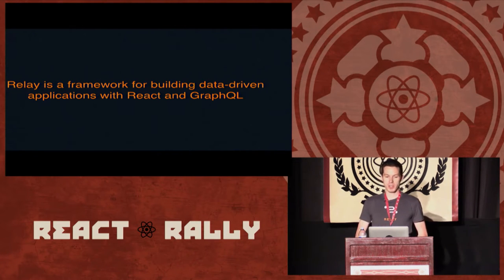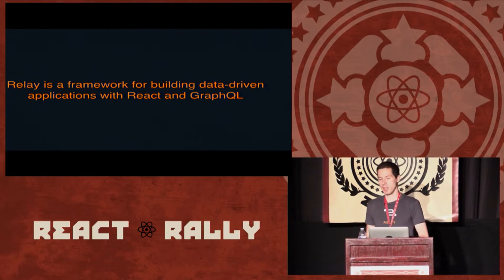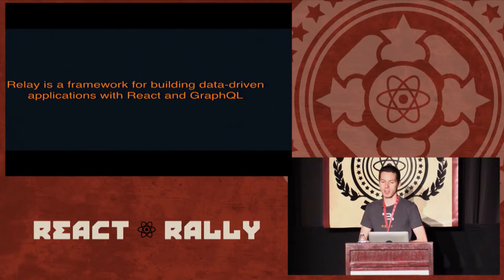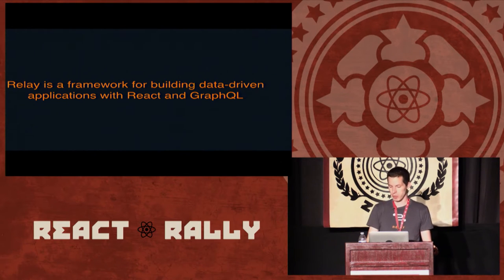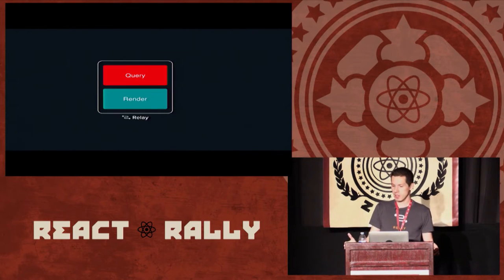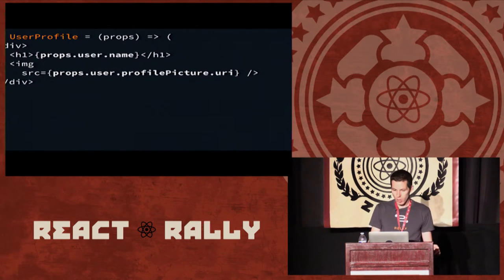Relay is a framework for building data-driven applications with React and GraphQL. The goal is for developers to specify what data is needed for each of their views, and then Relay figures out how and when to fetch that data. The idea is to let product developers focus on their product and not on building repetitive, error-prone data-fetching logic. In Relay, each component can specify its data dependencies via GraphQL, so we co-locate the queries and the render logic. Think of this like more advanced prop types.